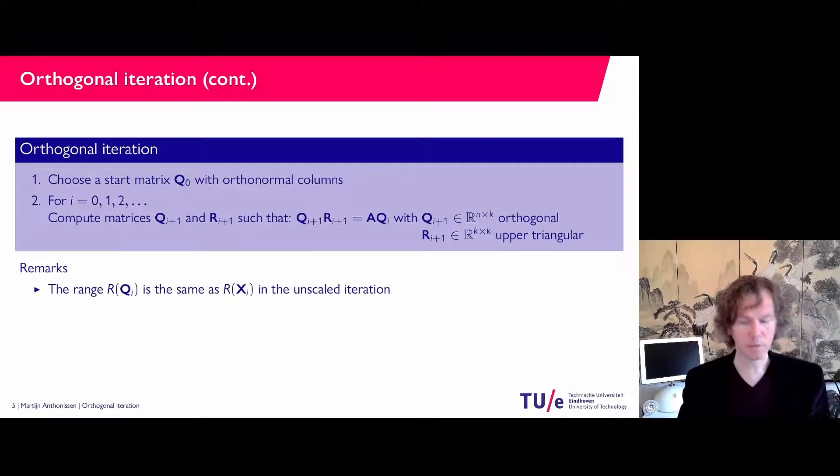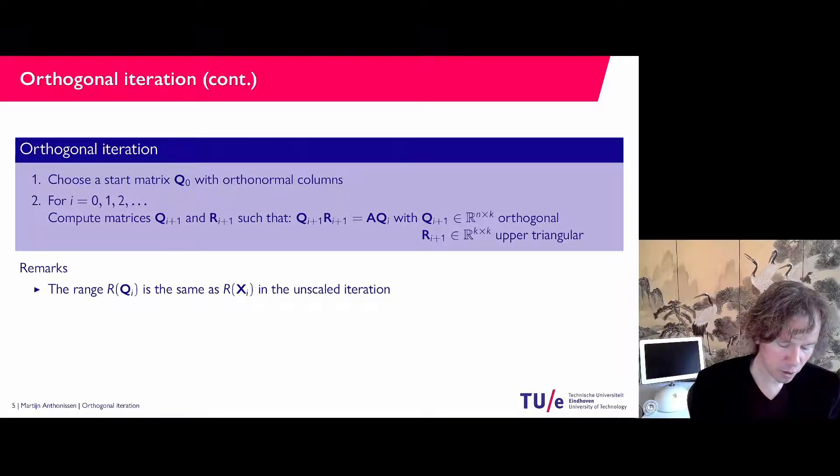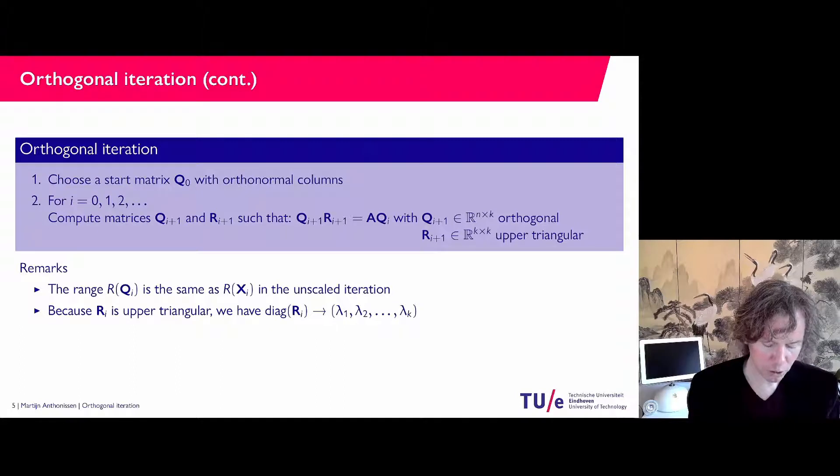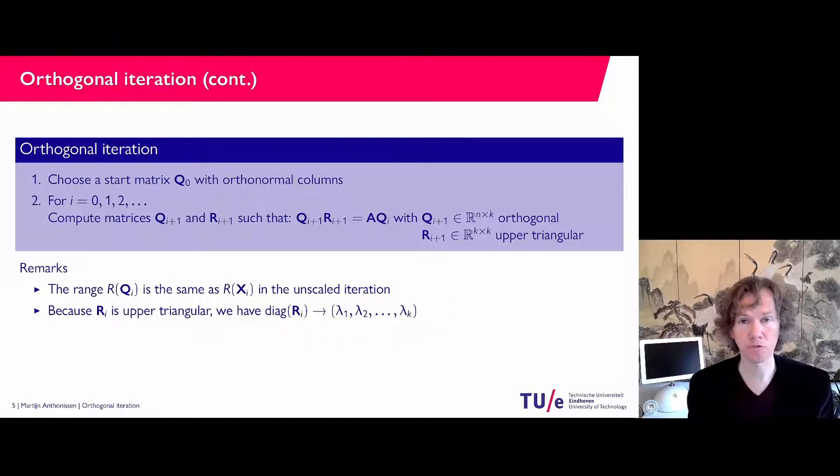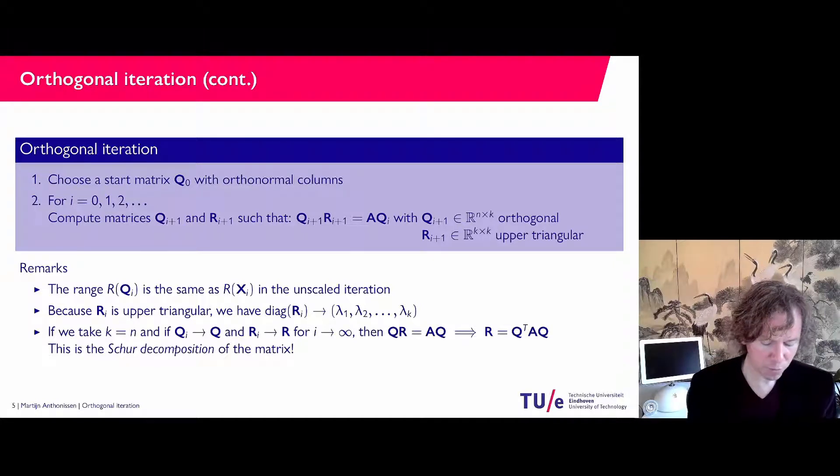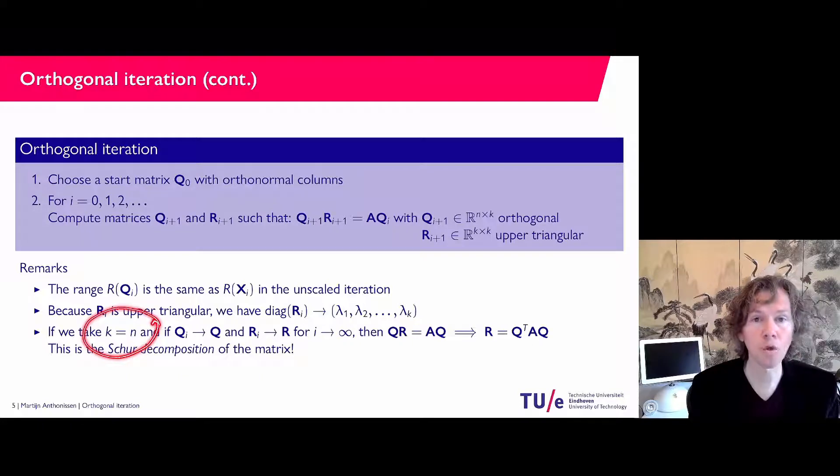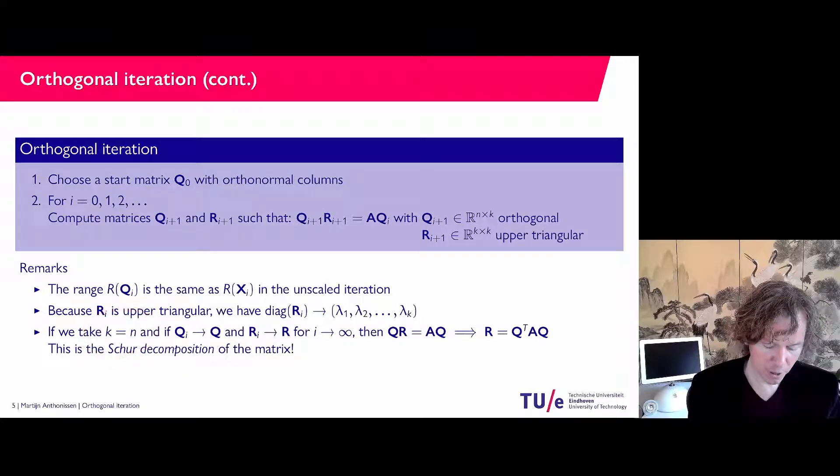Now the range, which space is being covered by the Q_i's, is the same as the X_i's in the unscaled iteration. And because R_i is an upper triangular matrix, its diagonal will converge to the eigenvalues of the matrix, so the first k eigenvalues. And that is particularly clear if you would take k equal to n, so we compute all of the eigenvalues.